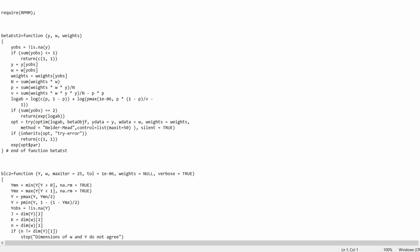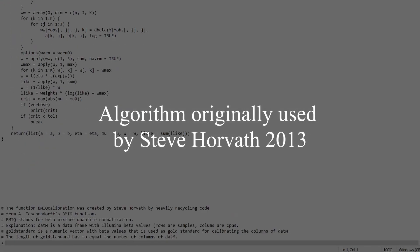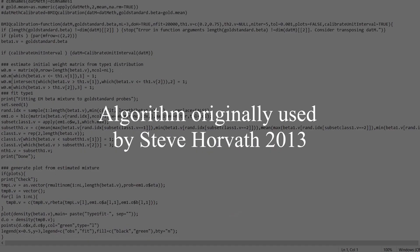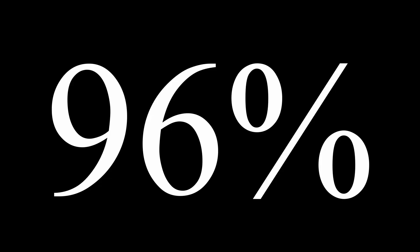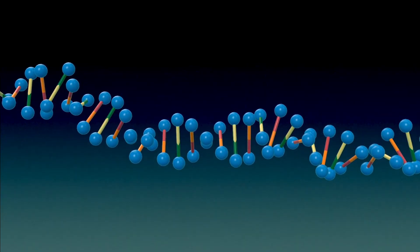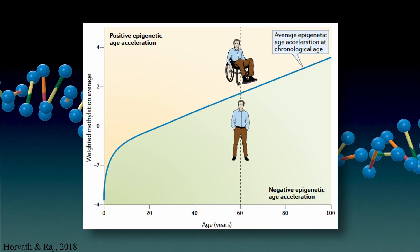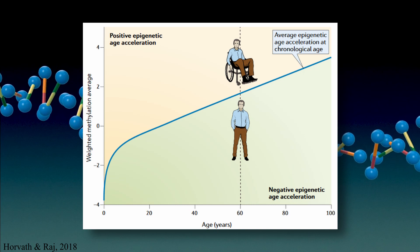Using ingenious algorithms, we can now predict somebody's chronological age based on certain methylation patterns in the genome with an accuracy of 96%. And the measured biological age even predicts all-cause mortality and many morbidities better than the chronological age.